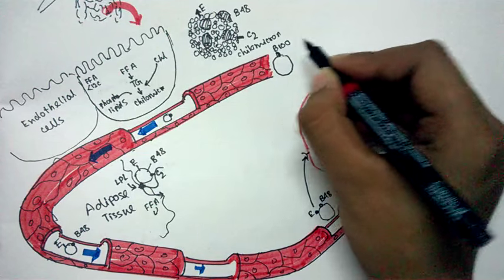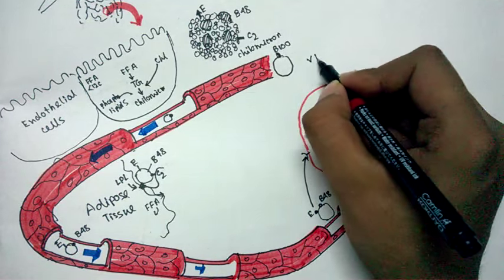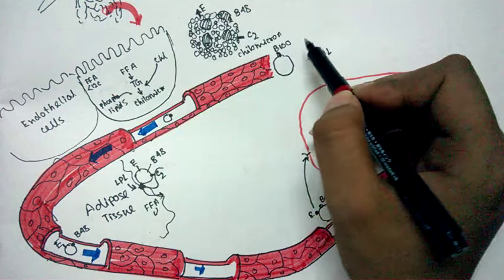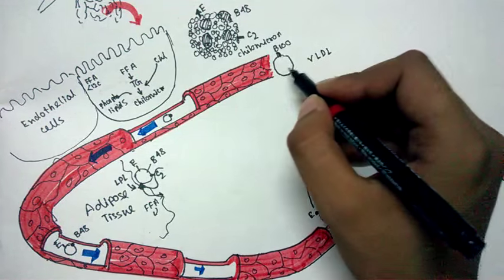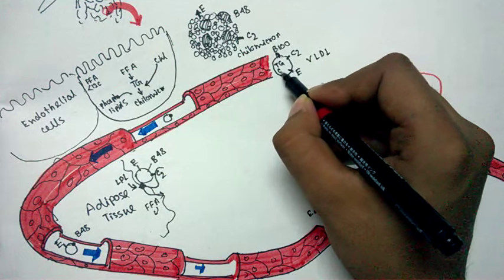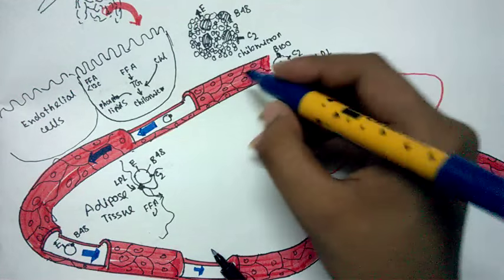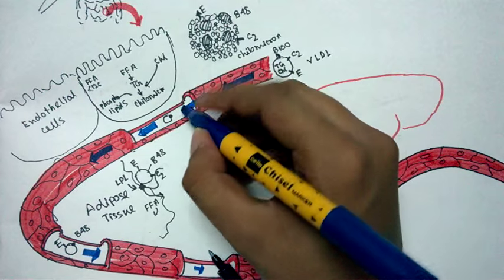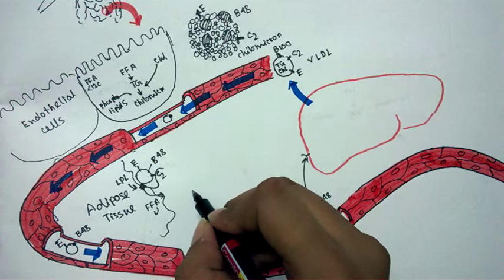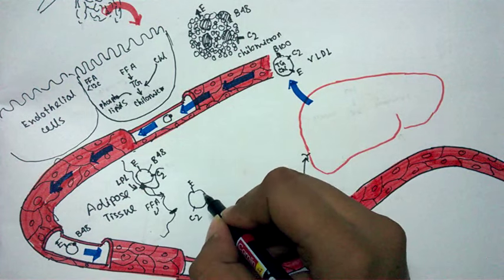The liver takes up the chylomicron remnant via the ApoE receptor, breaks it down, and can also secrete another type of lipoprotein containing ApoB100. This particle is called VLDL — very low density lipoprotein. ApoB100 and ApoB48 are isoforms generated by alternative splicing. VLDL also has C2 and E, and is loaded with cholesterol and triglycerides. Once secreted by the liver, VLDL enters the capillaries and migrates around the body.